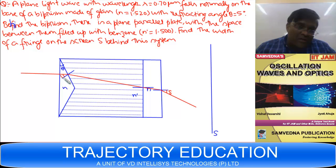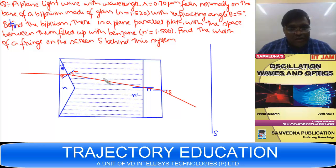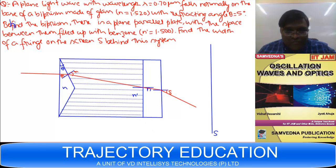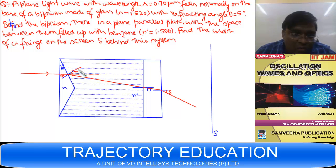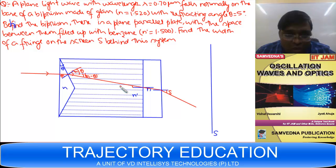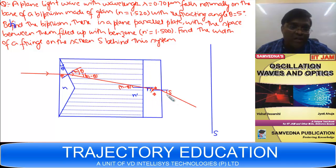If the refracting angle is θ, then the angle of incidence at the first surface is θ, the refracted angle inside benzene is R, and the angle of incidence at the second surface is (R − θ). The refracted angle emerging into air is φ. Let's apply Snell's law at each interface.